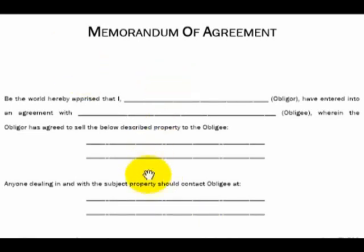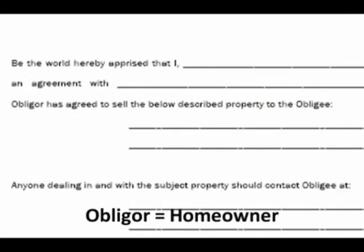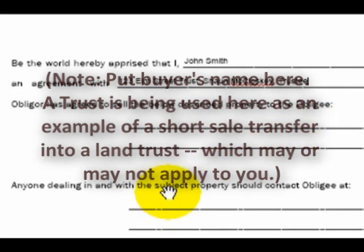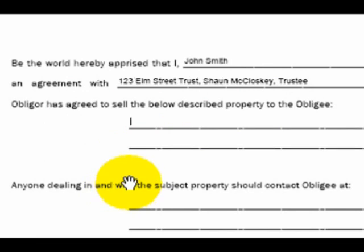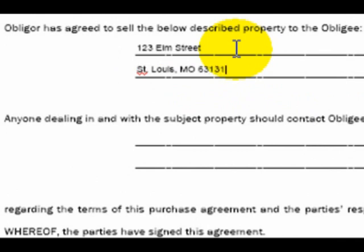Let's get into the details. This is basically an announcement to the world that I, the Obligeur — which is the homeowner, so John Smith — have entered into an agreement with the trust. So the 123 Elm Street Trust, and then you put the trustee name behind it: Sean McCloskey, trustee, or whoever your trust is. The Obligeur has agreed to sell the below described property to the Obligee. This is nothing more than the address of the property, so 123 Elm Street, St. Louis, 63131.